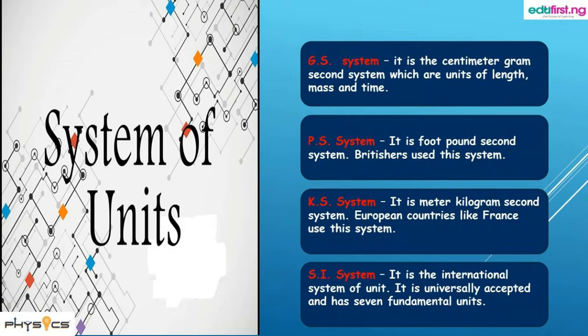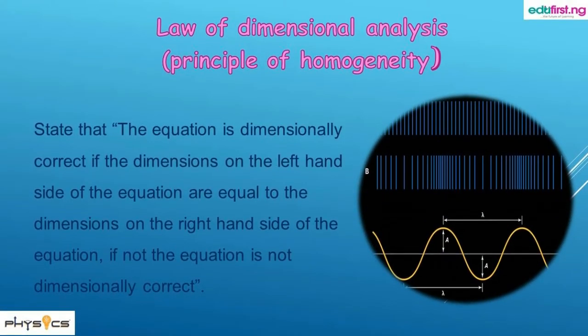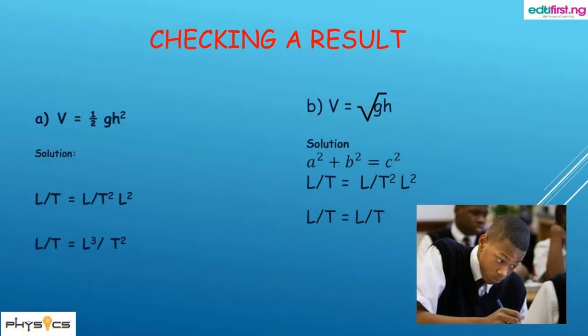Now let's look at the law of dimensional analysis, also known as the principle of homogeneity. This law states that an equation is dimensionally correct if the dimensions on the left-hand side of the equation are equal to the dimensions on the right-hand side. If not, the equation is not dimensionally correct. Let's check some results.